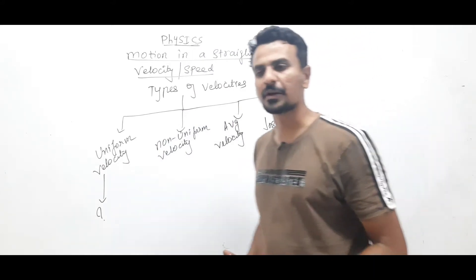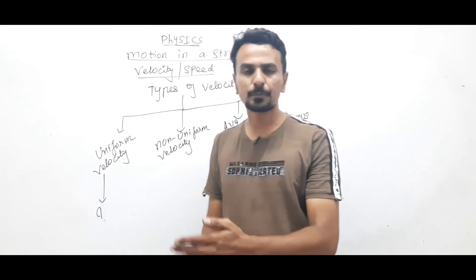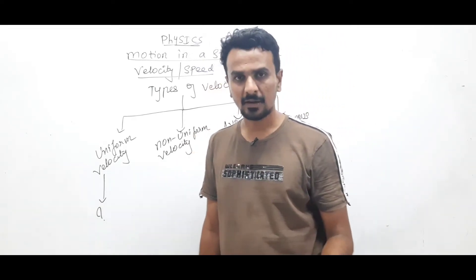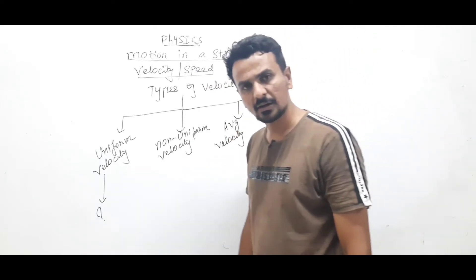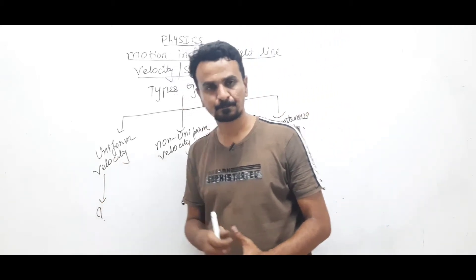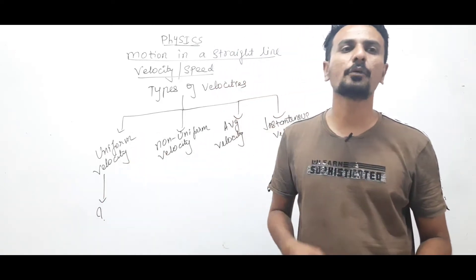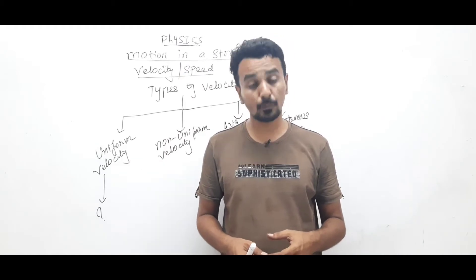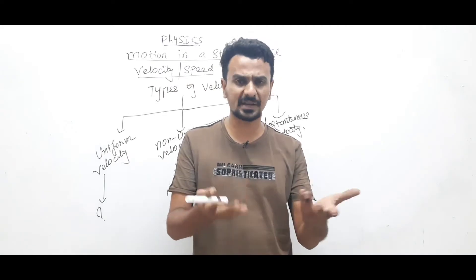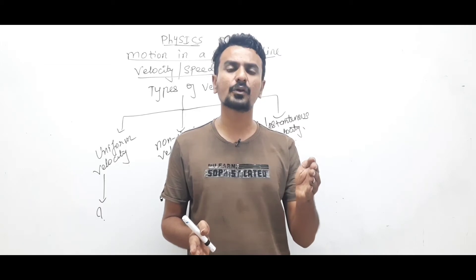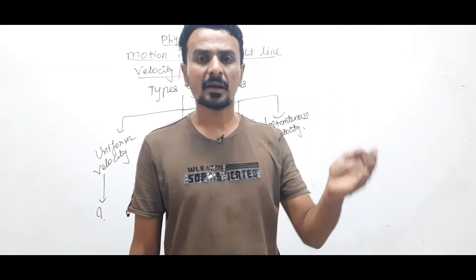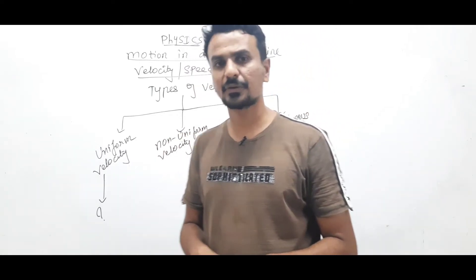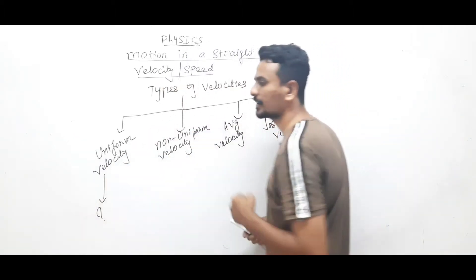Uniform velocity or uniform speed: when the object travels equal distances in equal intervals of time, or when the object covers equal displacements in equal intervals of time, it is said to be moving with uniform velocity. For example, a car undergoes a displacement of 4 meters in every 2 seconds — in the first 2 seconds, 4 meters; next 2 seconds, 4 meters — and so on. That means it is performing uniform motion and moving with uniform speed or velocity.